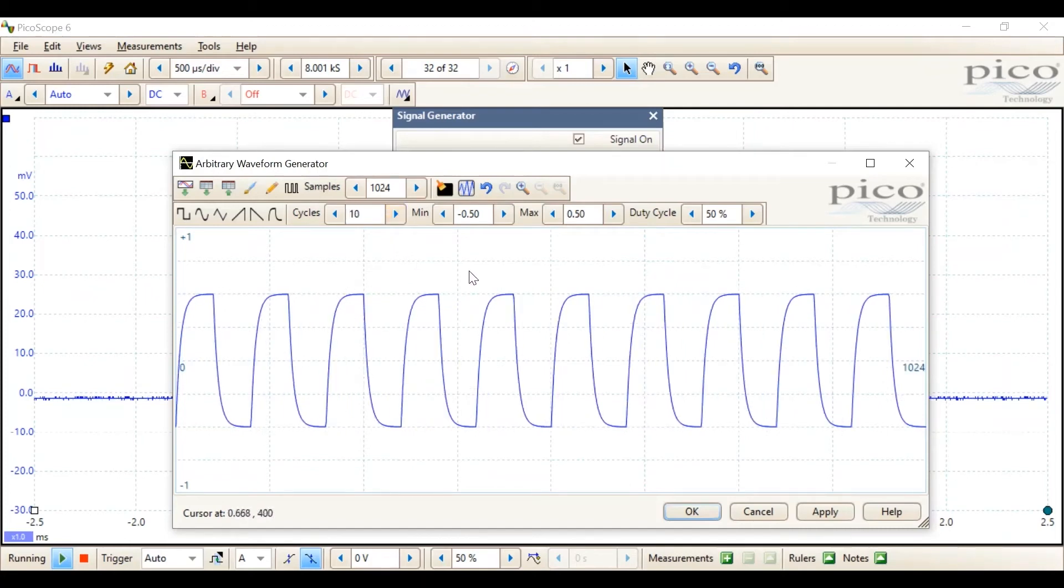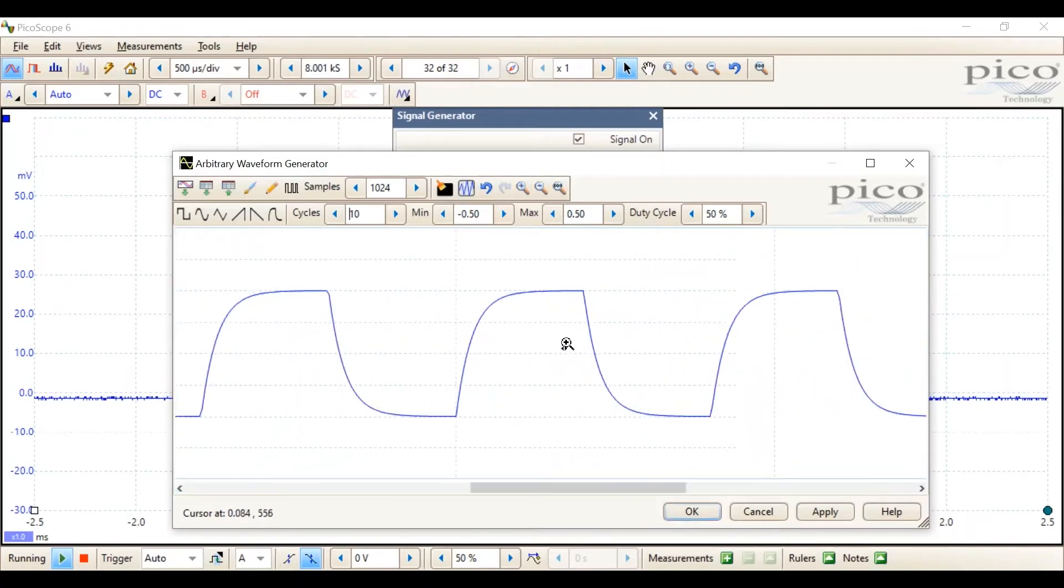Then increase the number of cycles to 10. And zoom in using this icon on one pulse.